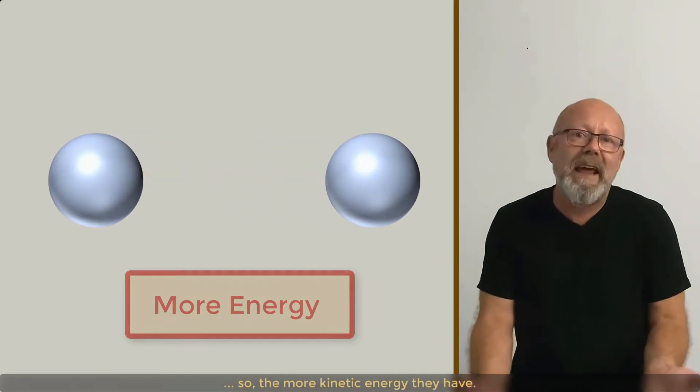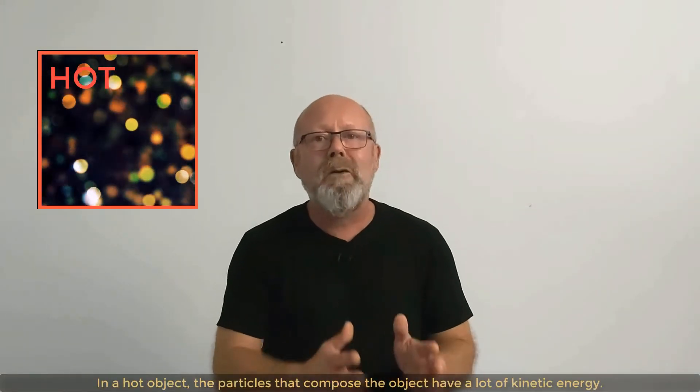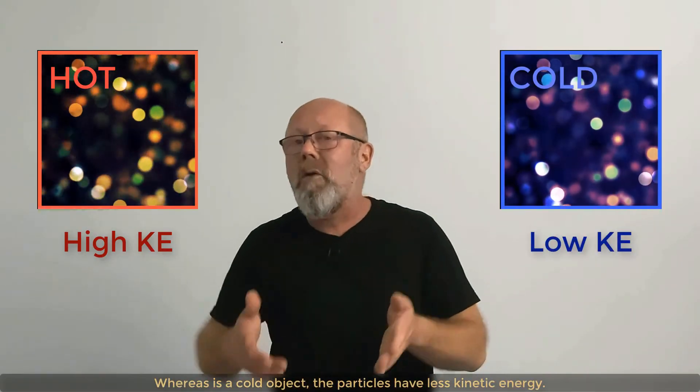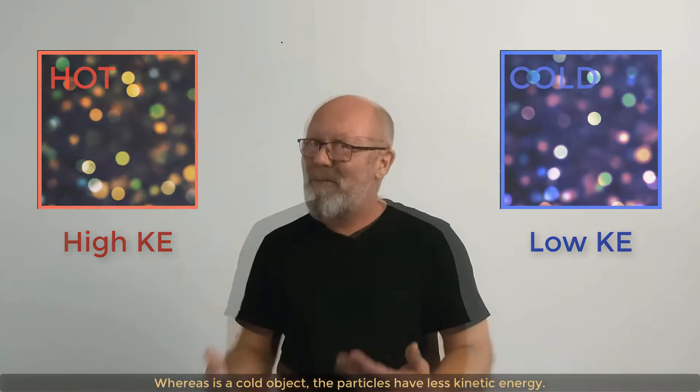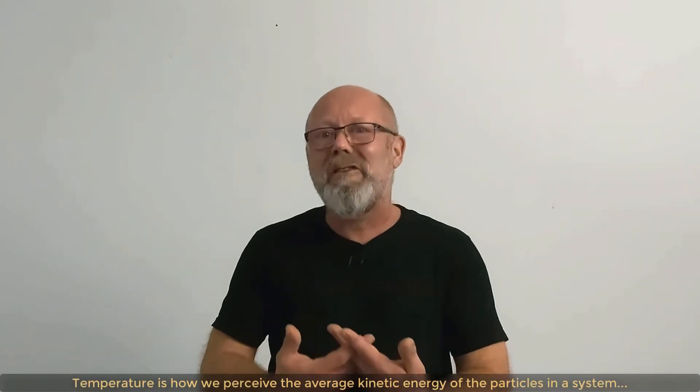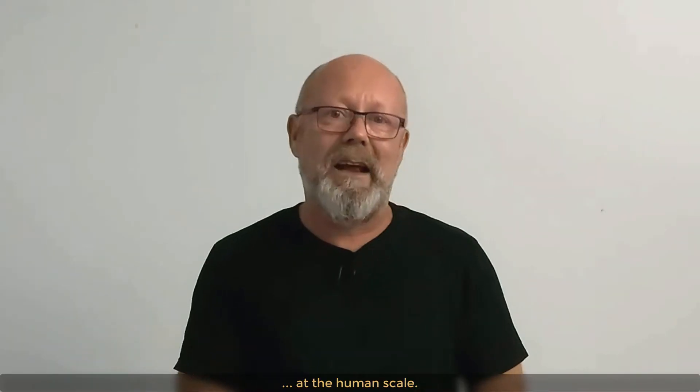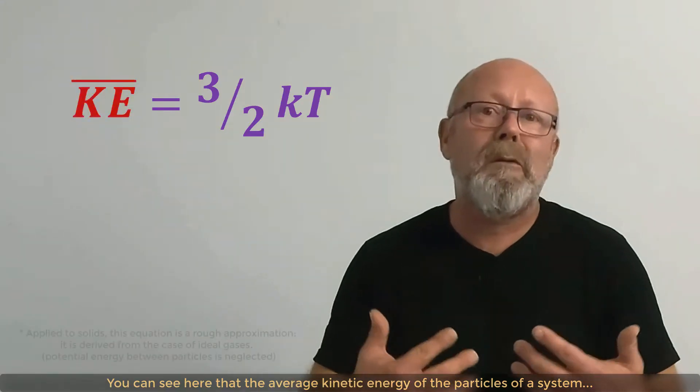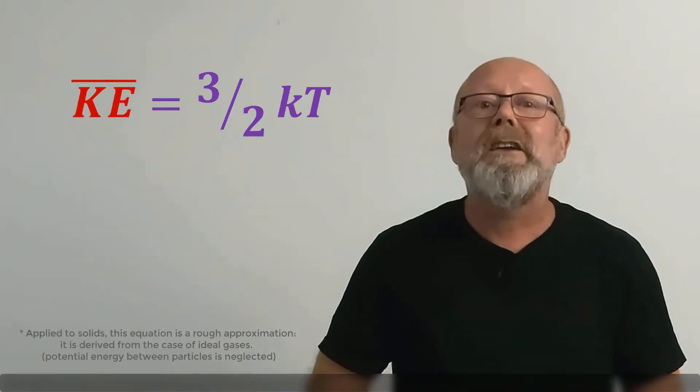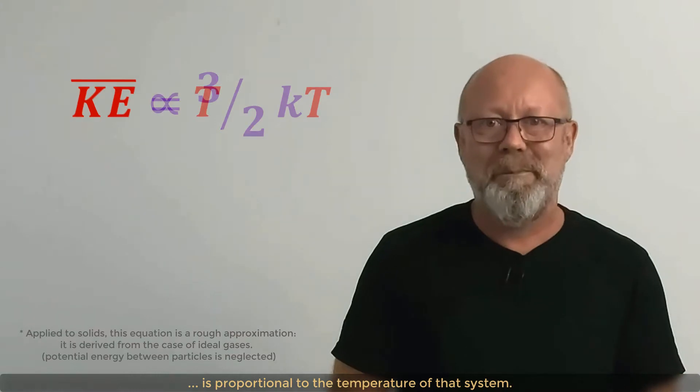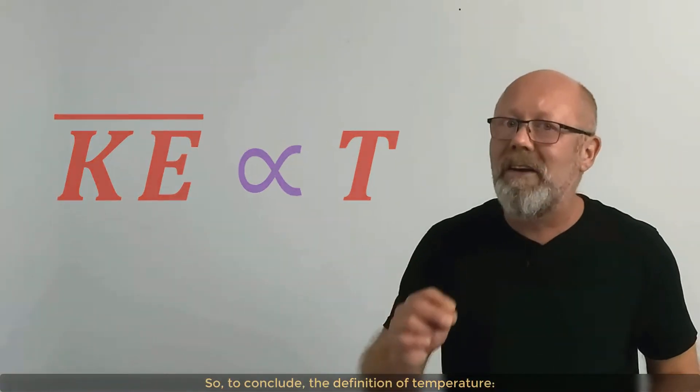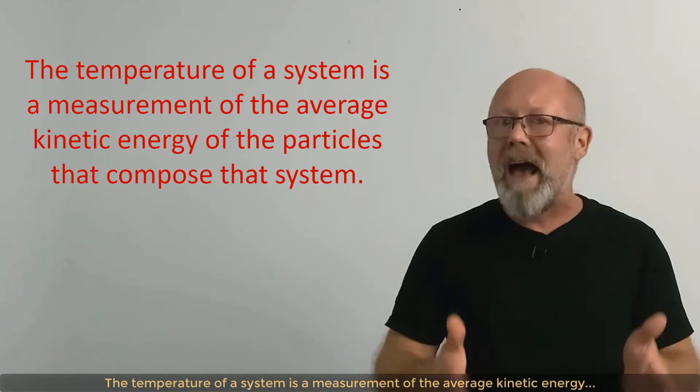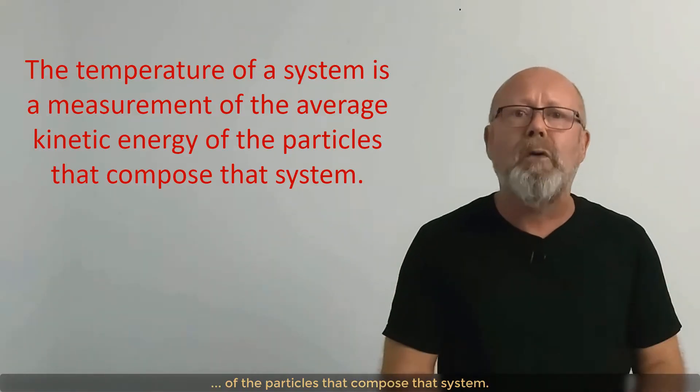So, the more kinetic energy they have. In a hot object, the particles that compose the object have a lot of kinetic energy. Whereas, in a cold object, the particles have less kinetic energy. Temperature is how we perceive the average kinetic energy of the particles in the system at the human scale. Check this equation. You can see here that the average kinetic energy of the particles of a system is proportional to the temperature of that system. So, to conclude, the definition of temperature. The temperature of a system is a measurement of the average kinetic energy of the particles that compose that system.